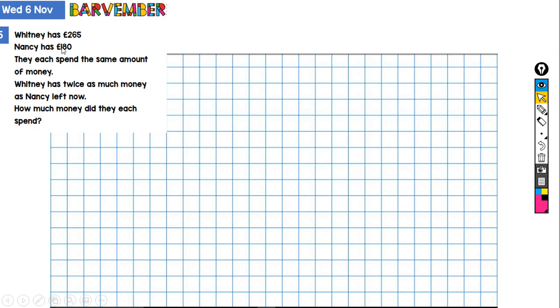So we've got two situations, a beginning situation and an end situation. And in the end, Whitney has twice as much money as Nancy. And we're asked, how much money did they each spend?